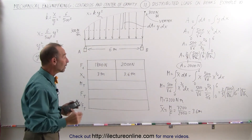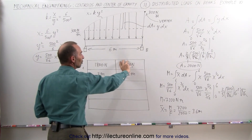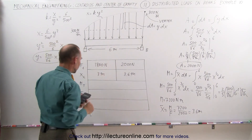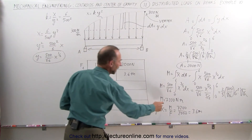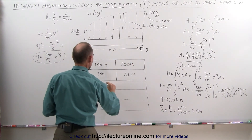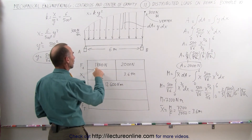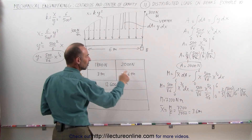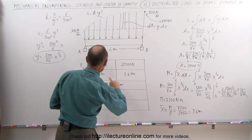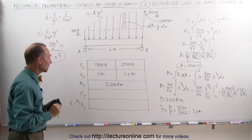Now we can find the total moment of the whole load distribution. The curved portion contributes 7200 newton-meters. We add the rectangular portion: 1800 newtons times 3 meters equals 5400 newton-meters. So the total moment is 5400 plus 7200, which equals 12,600 newton-meters. Quick check confirms: 3 times 1800 is 5400, and 2000 times 3.6 is 7200 — that is correct.